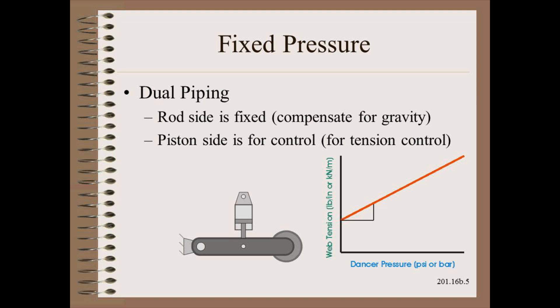The gold standard of piping for most any cylinder is dual piping. One side is called fixed and the other is called control. The so-called fixed side is adjustable,